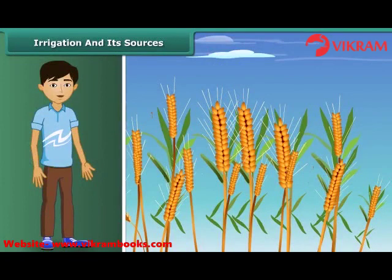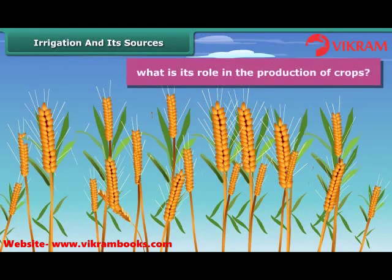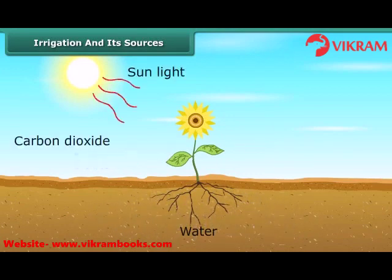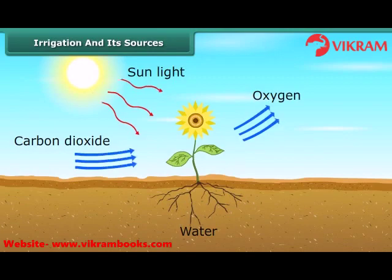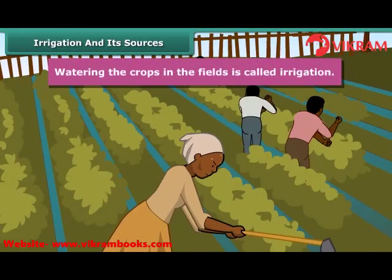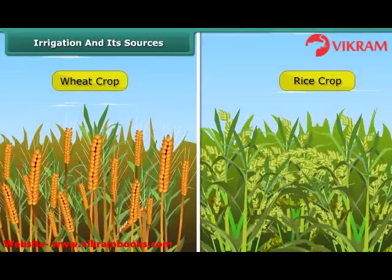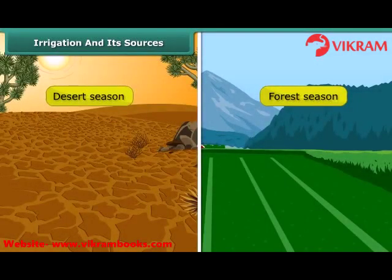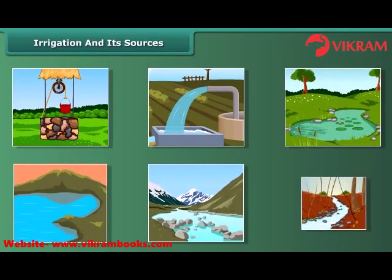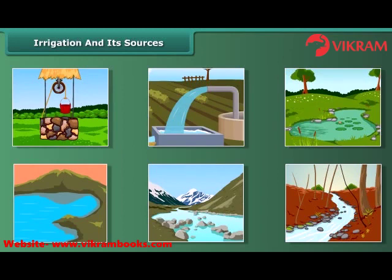Friends, as we all know, water is very essential for all living beings. Water is essential for crops because germination of seeds cannot take place under dry conditions. Water is absorbed by the plant roots, and along with it, minerals and fertilizers are also absorbed. Hence, watering the crops in the fields is called irrigation. The time and frequency of irrigation varies from soil to soil, crop to crop, and season to season. The main sources of irrigation are wells, tube wells, ponds, lakes, rivers, dams and canals.